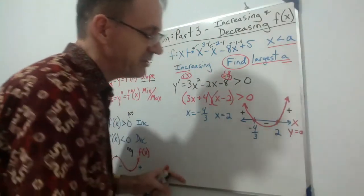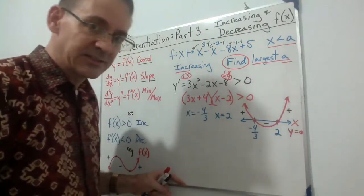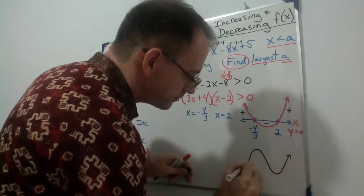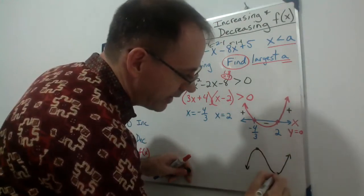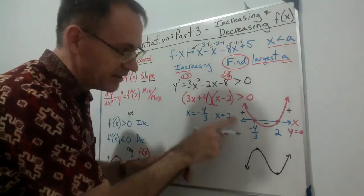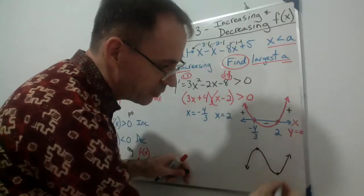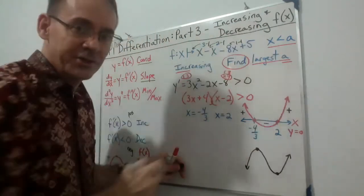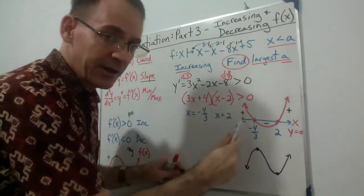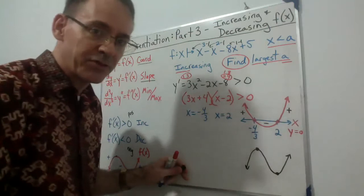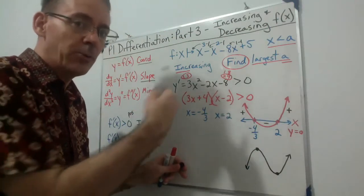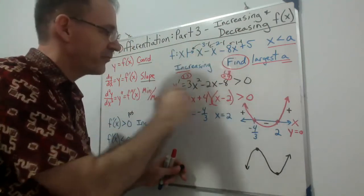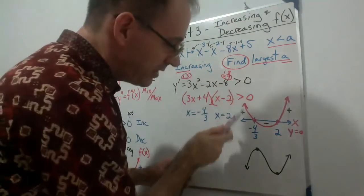If we wanted to draw the original graph, it would look like a cubic with a local max at −4/3 and a local min at 2 — increasing on the left, decreasing in the middle, and increasing again on the right. This is a rough sketch of the original function. What we solved with our quadratic inequality is the same method used in the quadratics unit, now applied to interpret our cubic's first derivative.